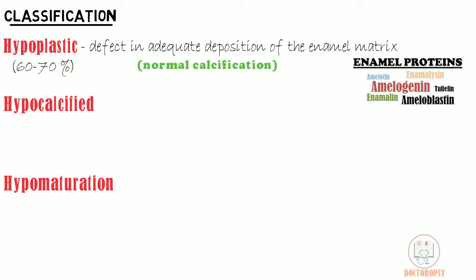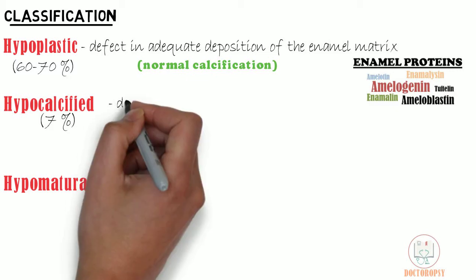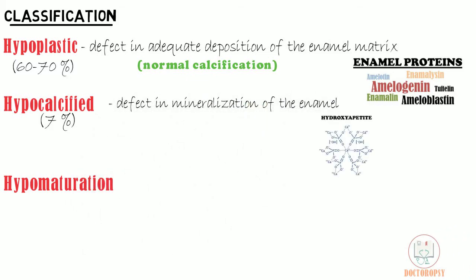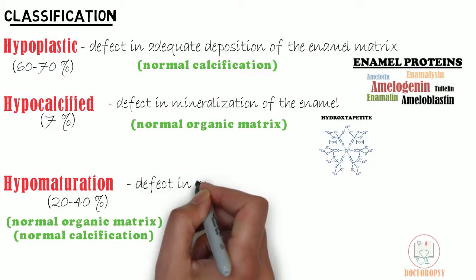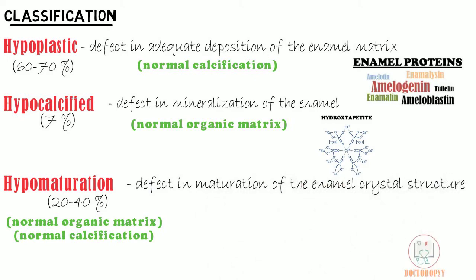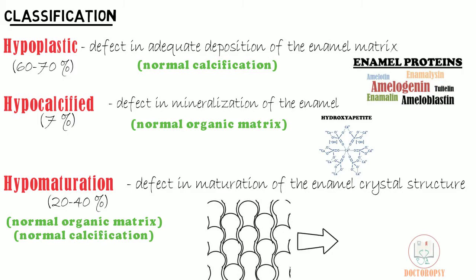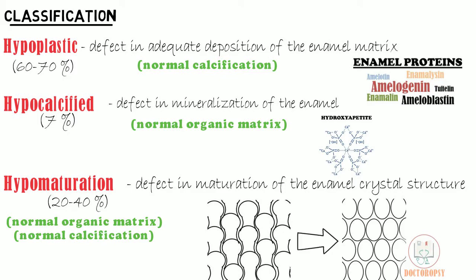Only 7 percent of cases are hypocalcified type, where the basic defect is in the mineralization of the enamel; however, enamel matrix is laid down normally. 20 to 40 percent of cases are hypomaturation type, where enamel matrix deposition and subsequent mineralization is normal — the basic defect is the maturation of the enamel crystal structure, resulting in alteration of enamel rod and rod sheath. A combination of the three types may be present in the same patient or even in the same tooth.